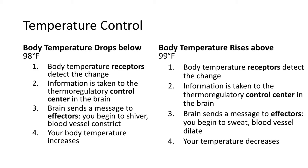What if the opposite is true? If your body temperature rises above 99 degrees Fahrenheit, temperature receptors pick that up and take the information to the thermoregulatory control center. The brain sends messages to the effectors: you begin to sweat, and your blood vessels dilate — they get bigger, come close to the surface of your skin, and release heat. That's why someone who's hot appears flushed; their skin looks red. As a result, body temperature decreases and you return to homeostasis.